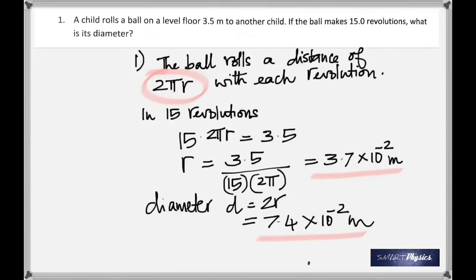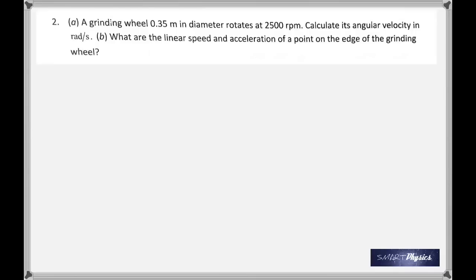Let's move on to the second question. A grinding wheel, 0.35 meters in diameter, rotates at 2,500 rotations per minute. Calculate its angular velocity in radians per second. And b: what are the linear speed and acceleration of a point on the edge of the grinding wheel?